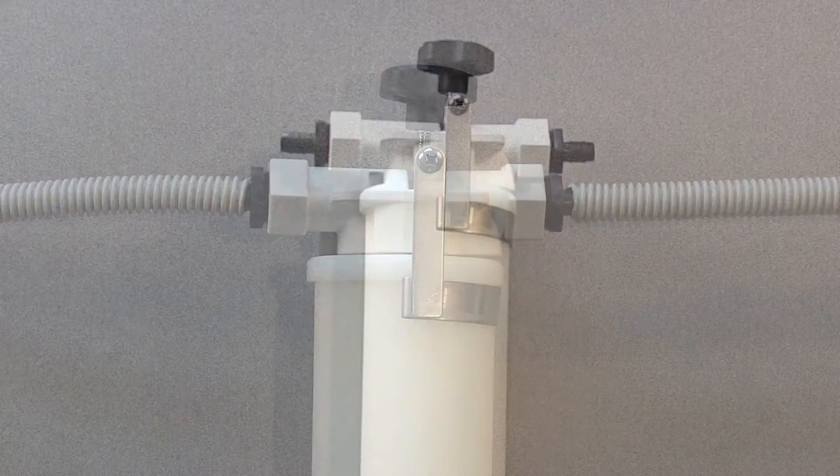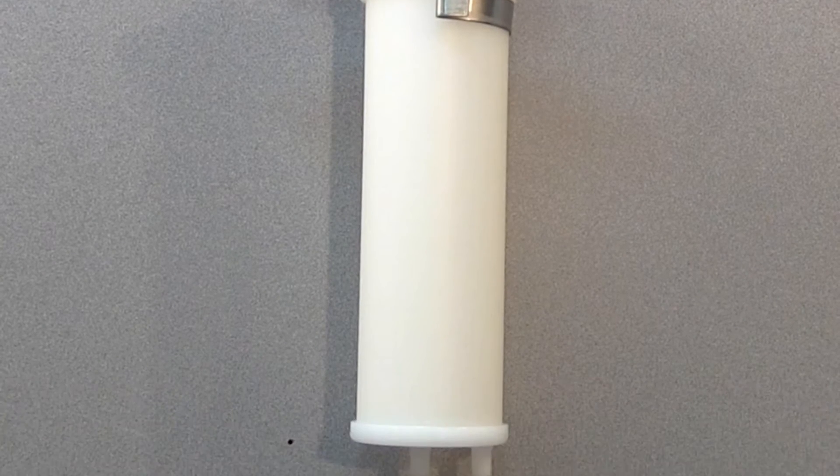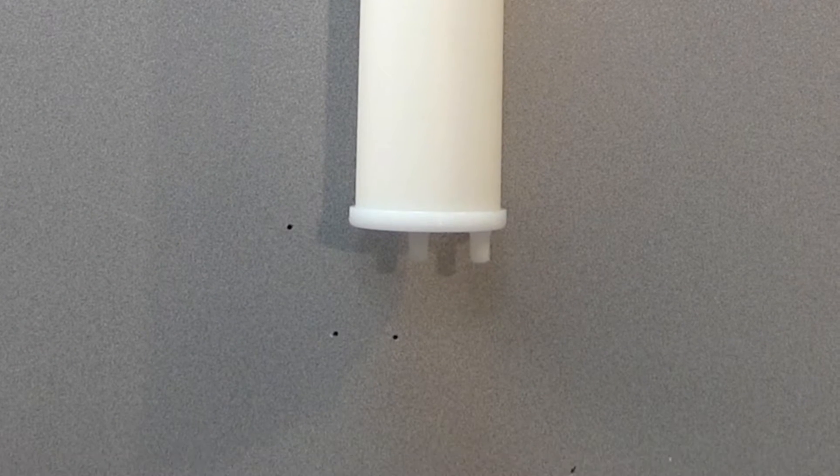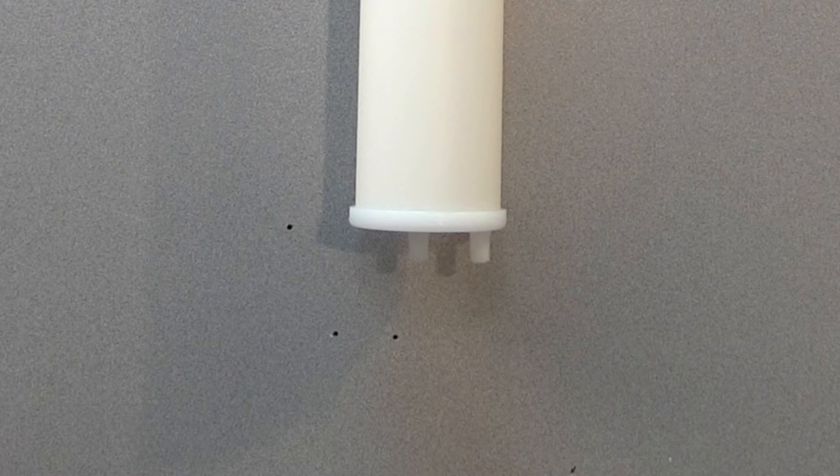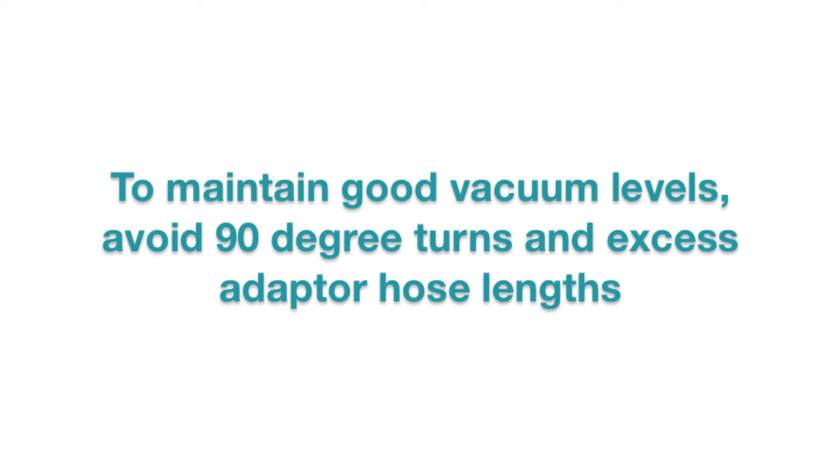We want to mount the separator vertically and with sufficient clearance beneath so that you can change the filter. Installation should be kept simple. Avoid 90 degree turns and excess adapter hose lengths. This way you'll be able to maintain good vacuum levels.